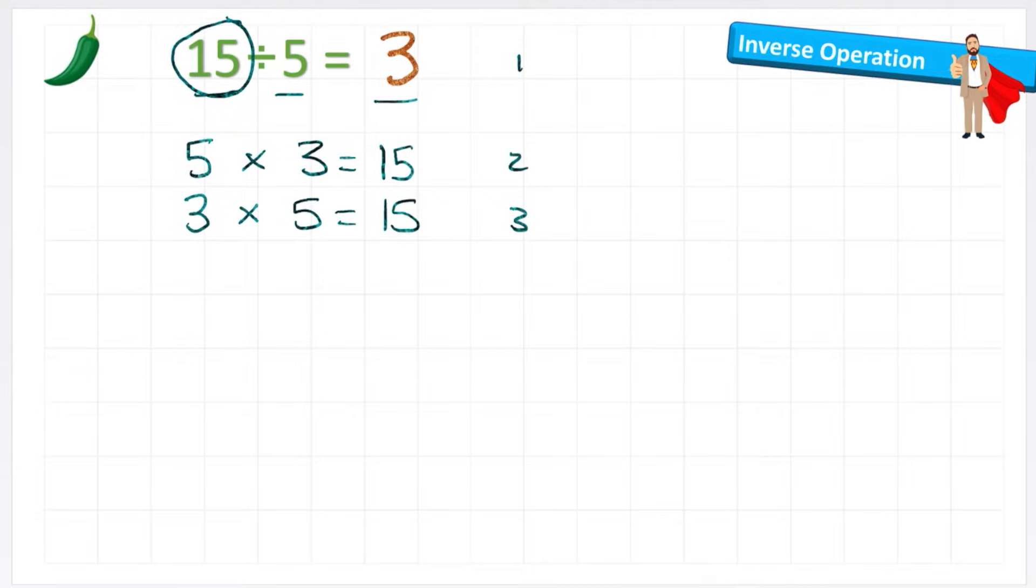I can see another division question because I think that if I get my 15 at the start again, and this time I divide by 3, I'm going to get 5. So with the same set of numbers, I've actually managed to create four number sentences. And these four number sentences together are called the number family. And every question will have a number family, a different way of expressing the numbers using different operations. In this case, we have two multiplication and two division questions. Let's have a quick look at another one.